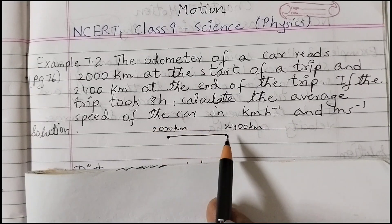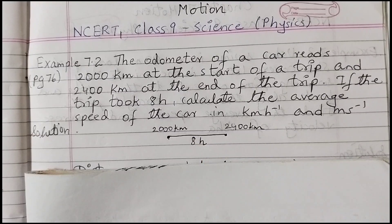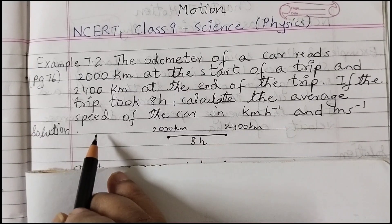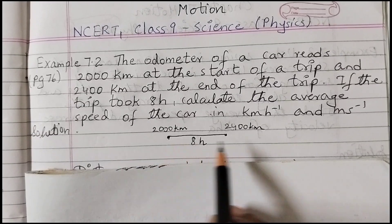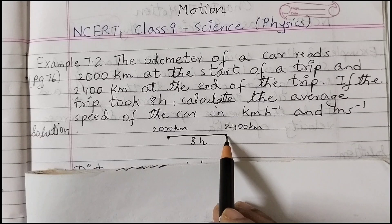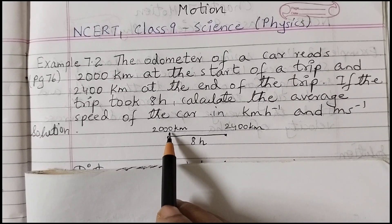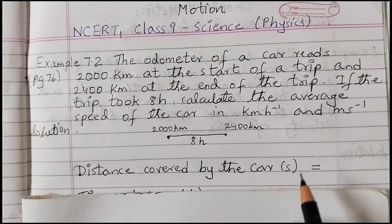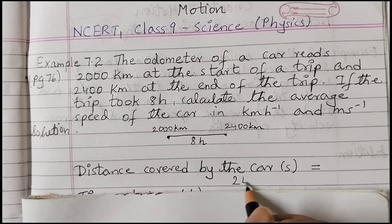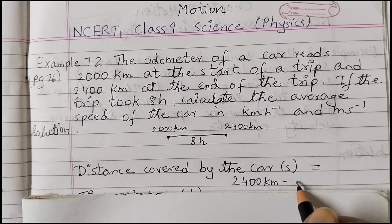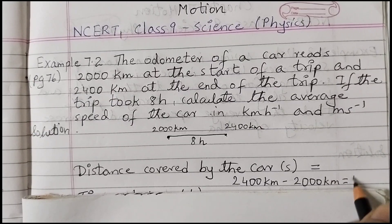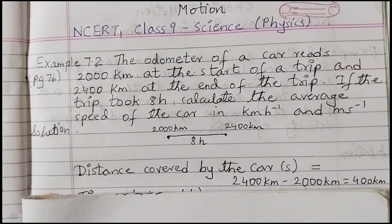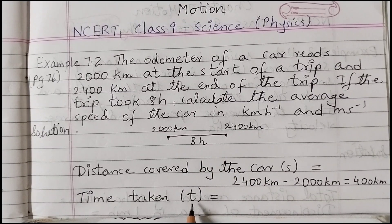From the starting point to the end point, it took 8 hours to travel. To find the distance, we simply subtract: distance covered by the car equals 2400 km minus 2000 km, which equals 400 kilometers. The time taken, denoted by t, is 8 hours.